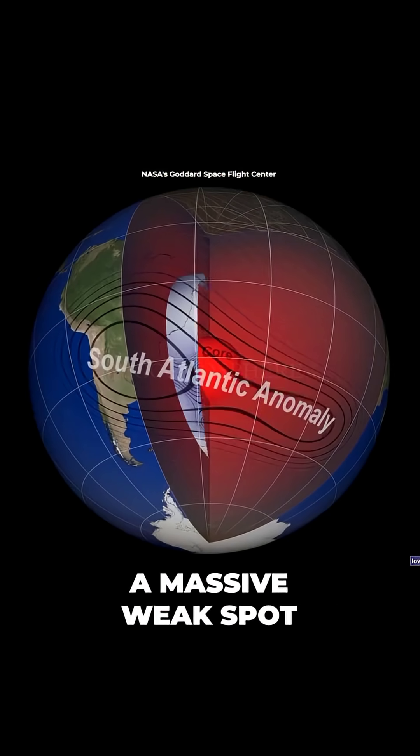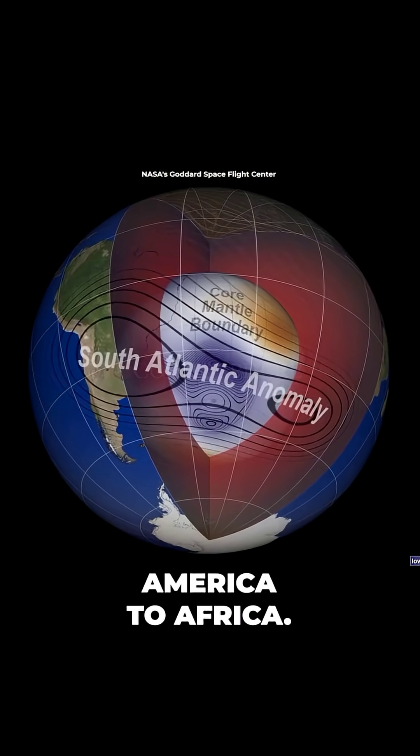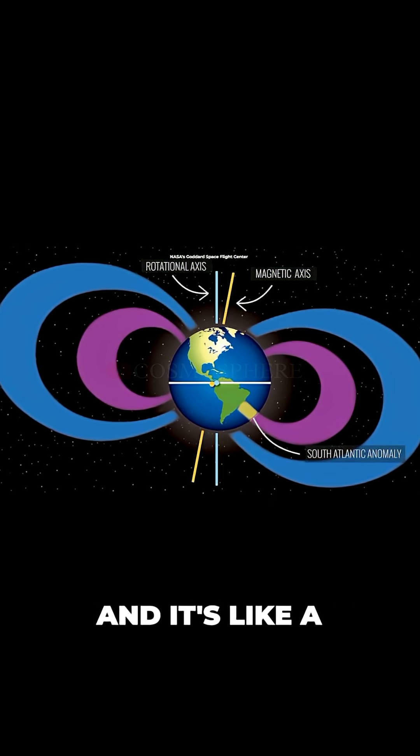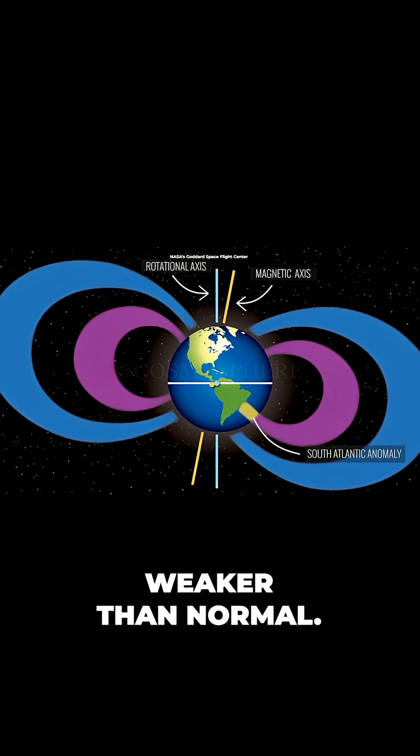Scientists have discovered a massive weak spot over the South Atlantic Ocean, stretching from South America to Africa. They call it the South Atlantic Anomaly, and it's like a dent in our magnetic armor where the field is significantly weaker than normal.